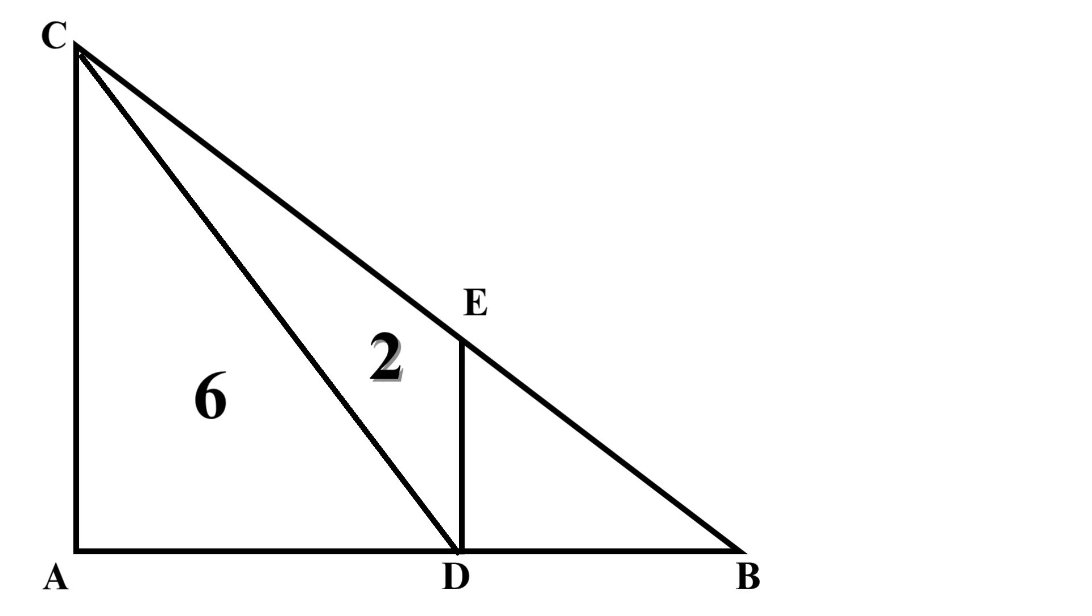Look at the right triangle ADC. We can label the base as a, and its height as b. So the area of triangle ADC equals a times b over 2. Since we know its area equals 6, a times b over 2 equals 6. By simplification, a times b equals 12.